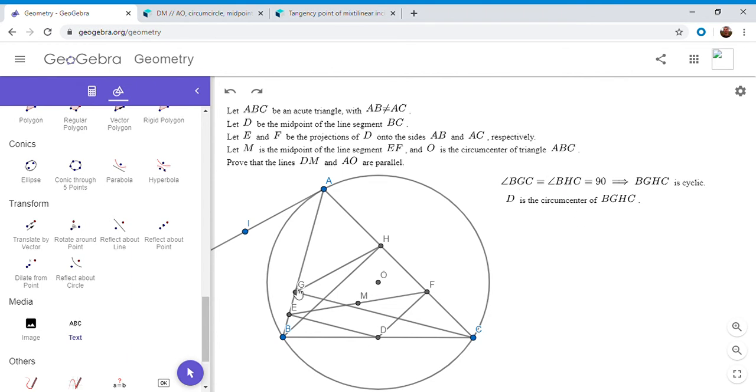So one thing I forgot to mention, so BGHC is cyclic, like I mentioned. But since BGC and BHC are right angles, that means BC is the diameter in the circumcircle of BGHC. So since BC is the diameter and D is the midpoint, D is the center of that circle. All right. So now I'm going to move on to the angle chase that I mentioned.